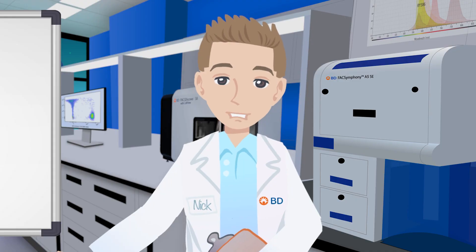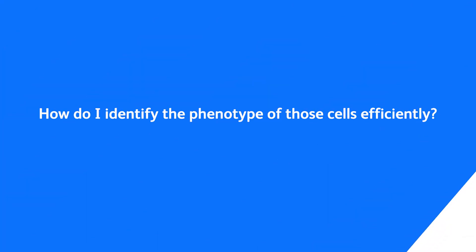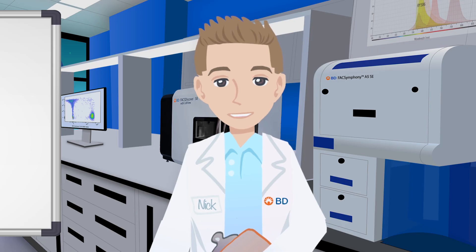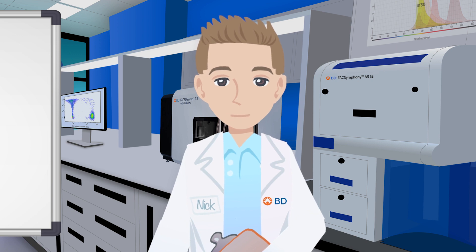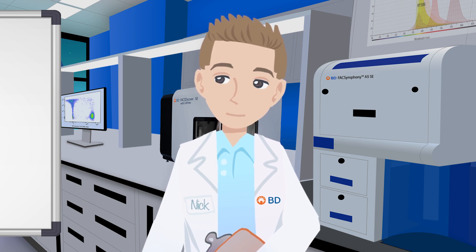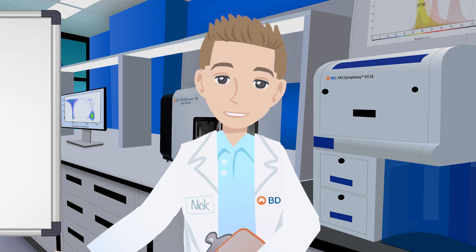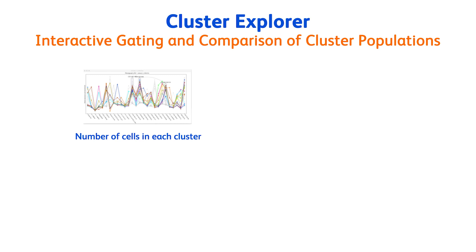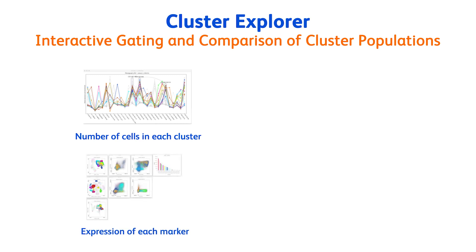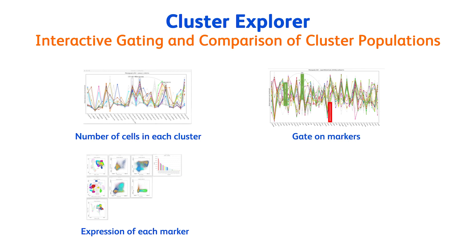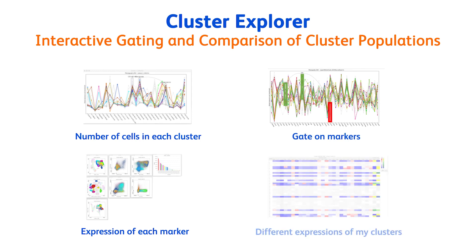Now I have my visualization and the different clusters. But how do I identify the phenotype of those cells efficiently and compare the expression between my experimental conditions? Thanks to the Cluster Explorer plugin, I will be able to complete the phenotyping and comparison steps. Cluster Explorer, via a series of interactive panels, lets me look at the number of cells in each cluster, the expression of each marker for each cluster, gate on markers, and see the expression of my clusters between my experimental conditions.